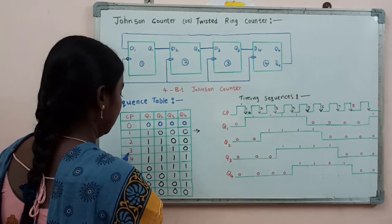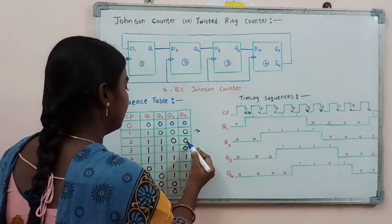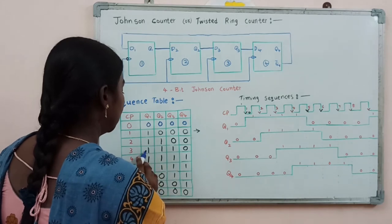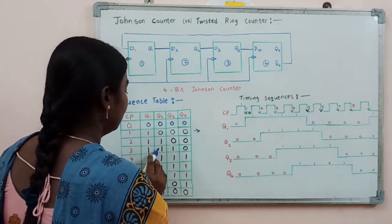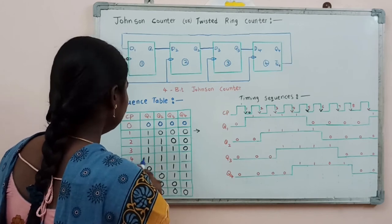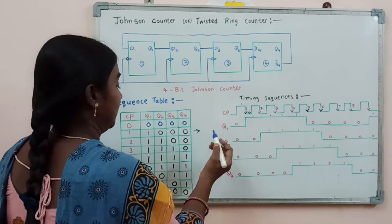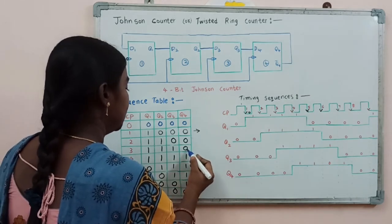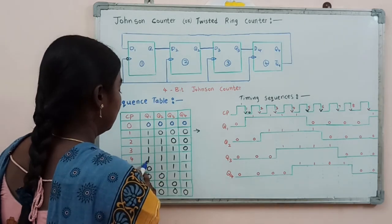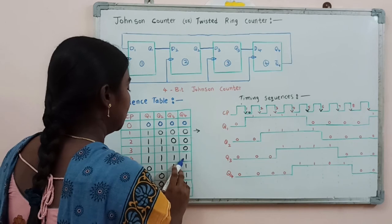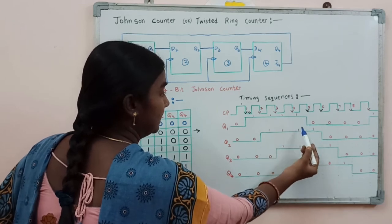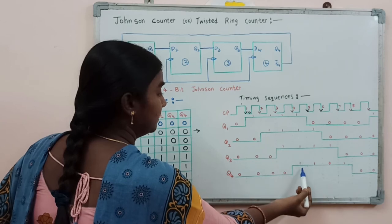Now we will apply the third clock pulse. Q4 is 0, so its complement is 1, which is fed back to the first flip-flop. Q1 will be 1, Q2 will be 1 from the previous output, Q3 will be 1, and Q4 is still 0. Now by applying the fourth clock pulse, Q4 is 0, so its complement is 1, which is fed back to the first flip-flop input. So D1 is 1, Q1 will be 1, Q2 will be 1, Q3 will be 1, and Q4 will be 1. After the fourth clock pulse: Q1 is 1, Q2 is 1, Q3 is 1, Q4 is 1.